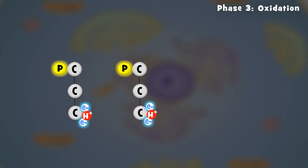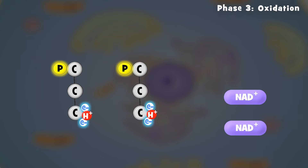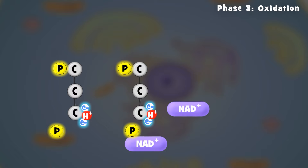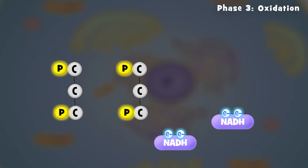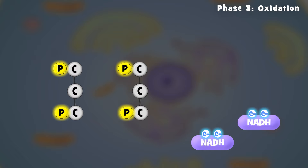Phase 3: Oxidation. During this phase, these remnants of glucose get oxidized, meaning that electrons and hydrogens are stripped off of them and transferred to special electron carrier molecules, making NADH. We will make NADH many times throughout respiration, so remember it. NADH will carry electrons to the final phase of respiration, the electron transport chain — more on that later.